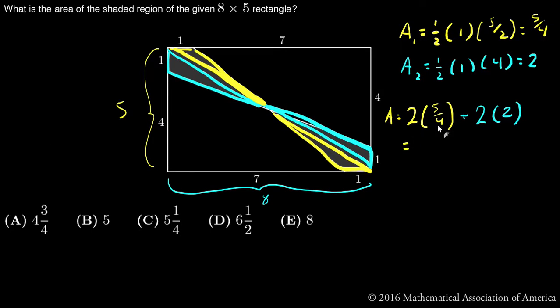Two times five fourths is five halves. Two times two is four. And now five halves is two and one half. Two and one half plus four is six and one half. Comment below if you have any questions.